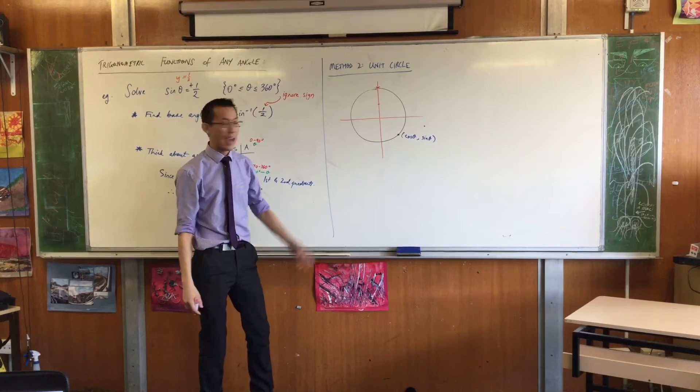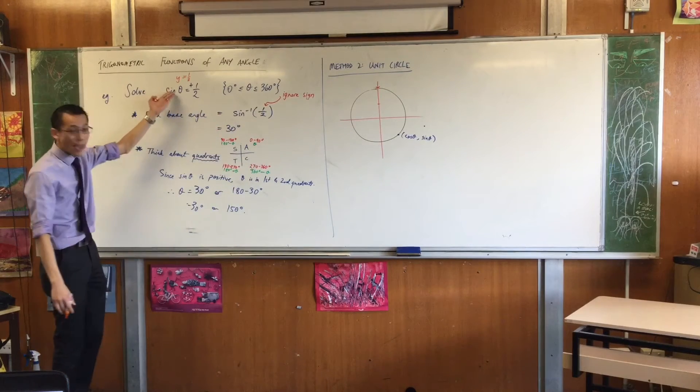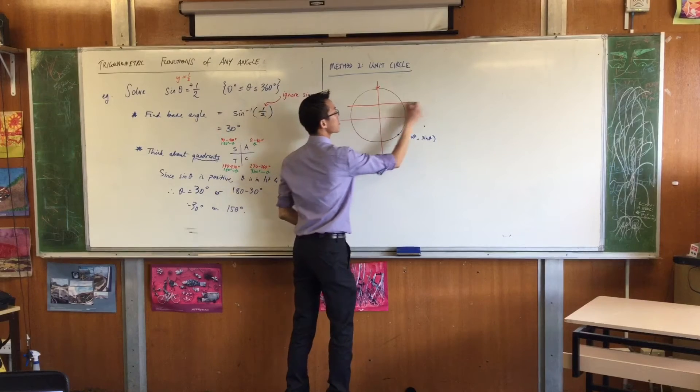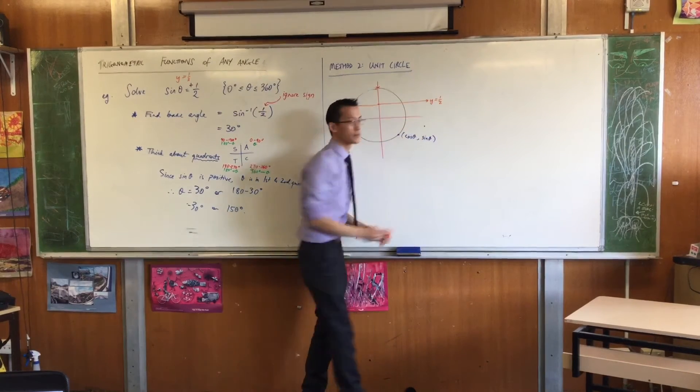So get your ruler out, and on top of your unit circle just draw the line y equals a half. Okay?